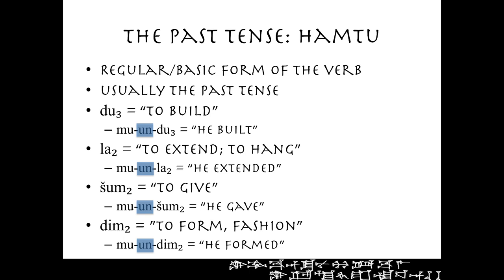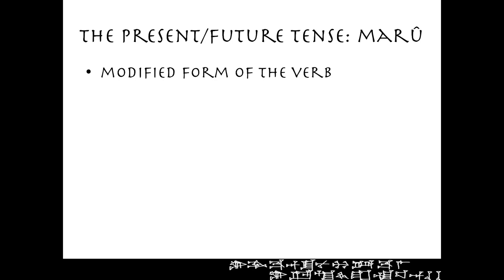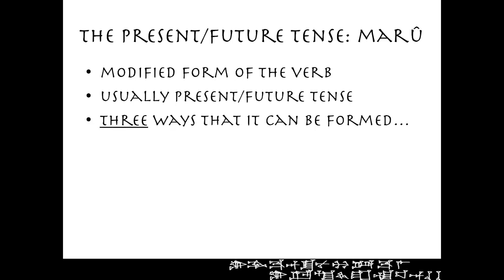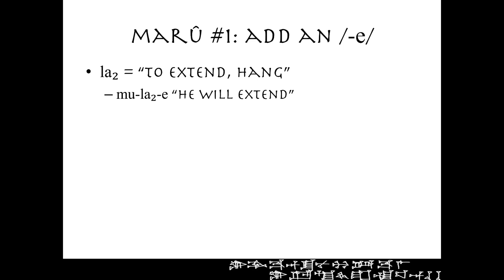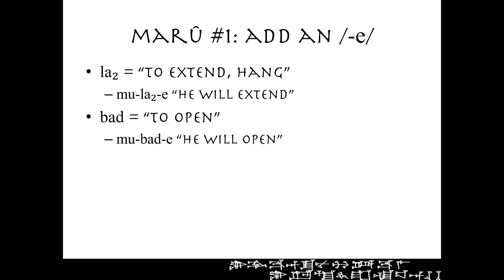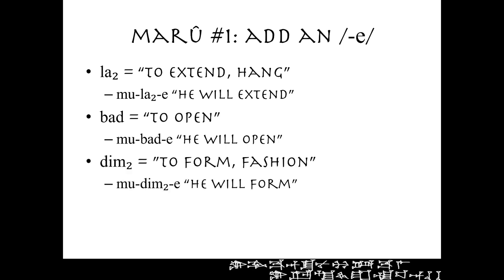The maru forms — the present or future tense — this is the modified form of the verb. It's usually present or future tense, and there are three different ways it can be formed. First, you can add an E to the end of the verb. So latu, 'to extend or to hang': mu-latu-e means 'he will extend' or 'he extends.' Bad, 'to open': mu-bad-e, 'he will open.' Dimtu, 'to form or to fashion': mu-dimtu-e, 'he will form.' The E on the end is what you need to remember — it can indicate a maru form, present or future tense.